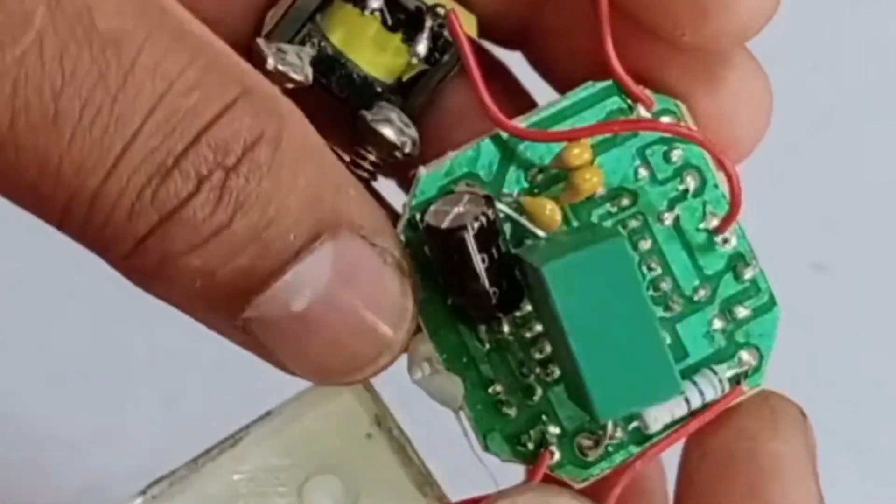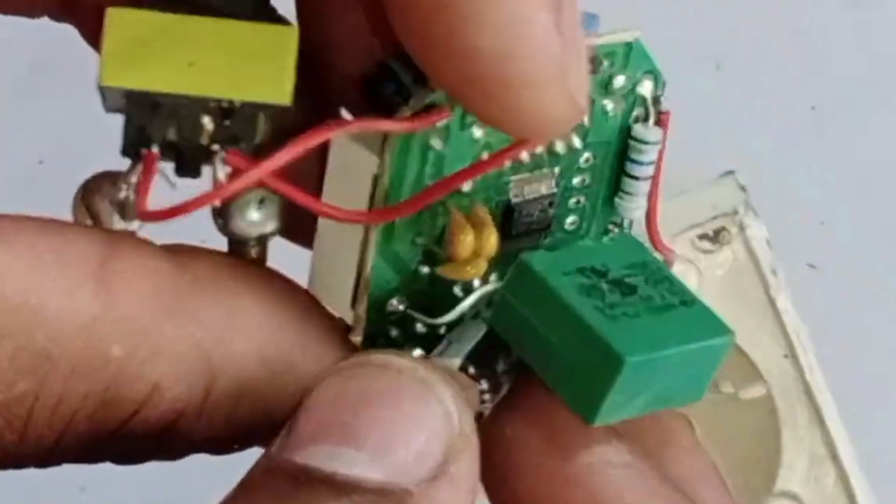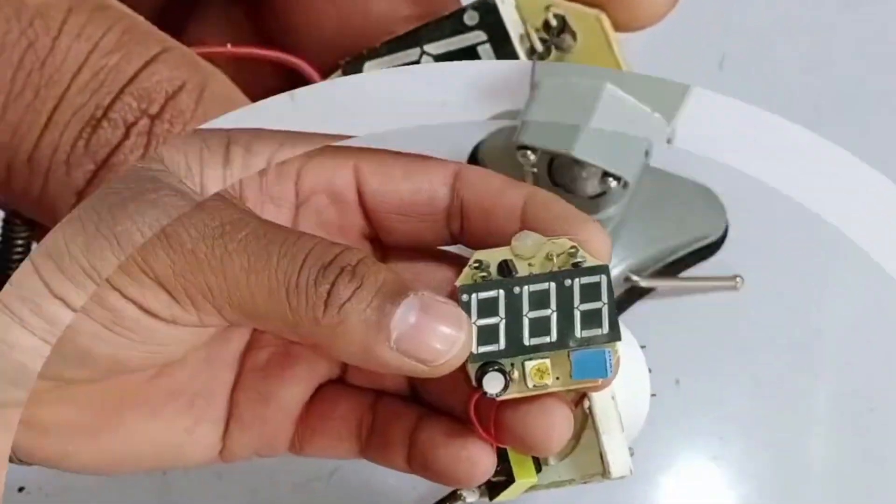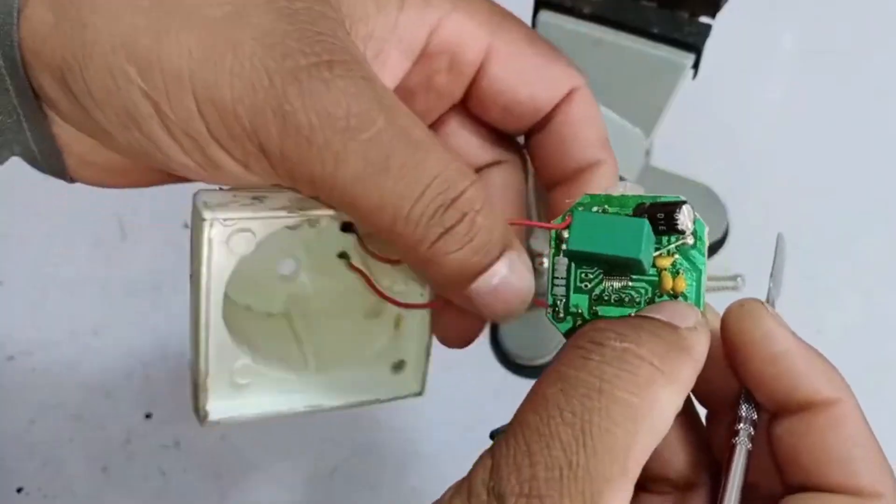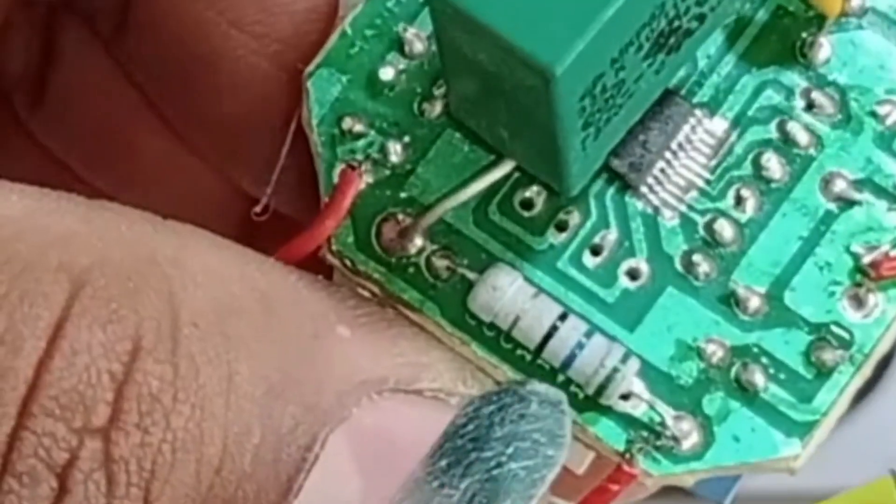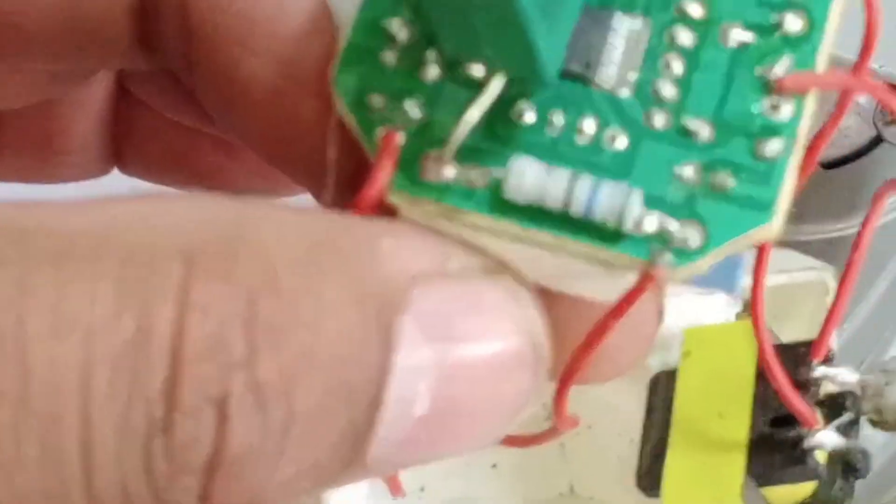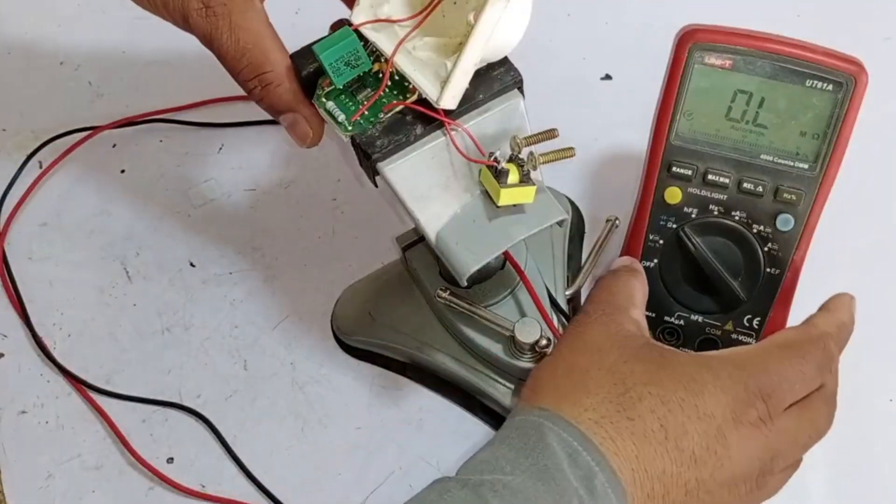Now, you can see the complete system, including the PCB. We will check the components to identify what is faulty. Let me explain the system here. Look, there are diodes installed here, which are rectification diodes. Next, you can see a resistor installed here, which is rated at 56 ohms. We will now test this resistor.